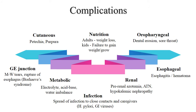Complications of vomiting include cutaneous complications like petechiae and purpura. Nutritional: weight loss in adults; failure to gain weight and height in children. Oropharyngeal complications like dental erosions and sore throat. At the gastroesophageal junction: Mallory-Weiss tears, or rupture of the esophagus — Boerhaave syndrome. Metabolic complications: electrolyte, acid-base and water imbalance. Renal complications: pre-renal azotemia, acute tubular necrosis, hypokalemic nephropathy. Esophageal complications like esophagitis and hematoma. Infection: spread of infection to close contacts and caregivers in case of H. pylori and other viruses.